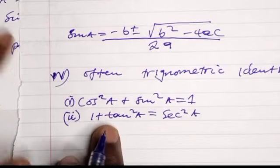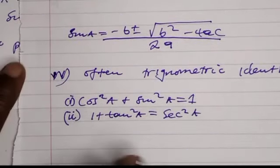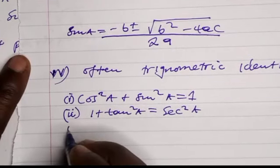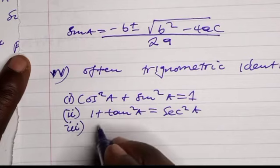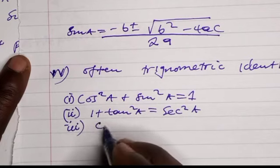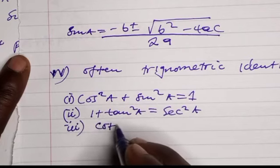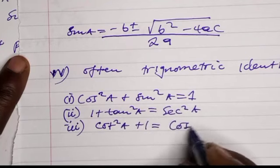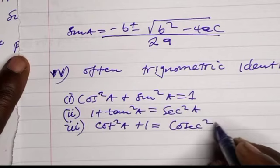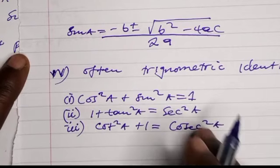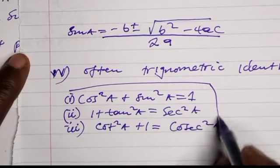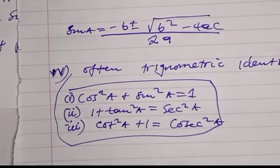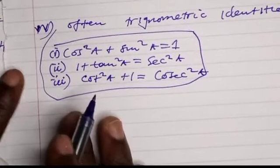Make sure you know these identities in order to solve trigonometry equations. Identity number three: cot²(A) + 1 = cosec²(A). You must take these identities into consideration when solving trigonometry equations.